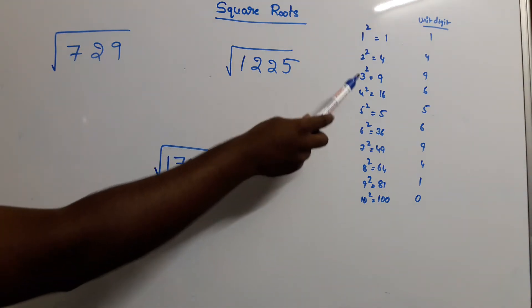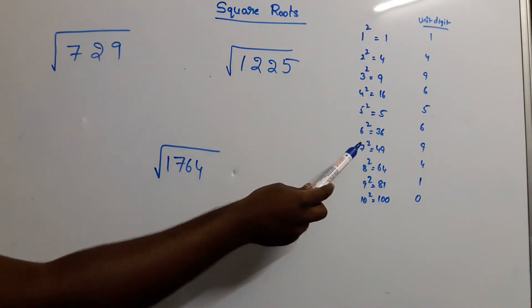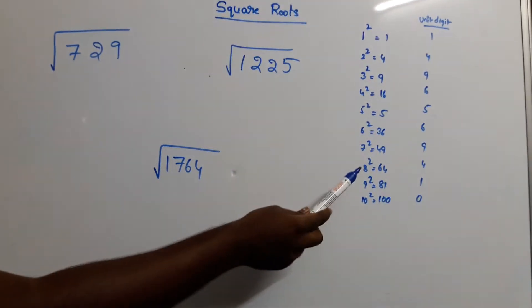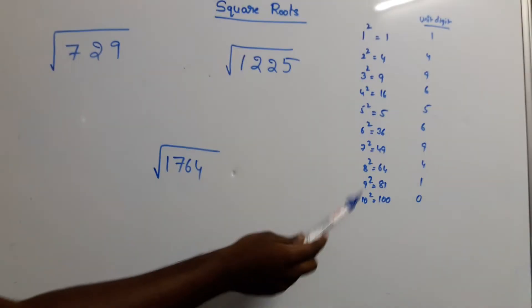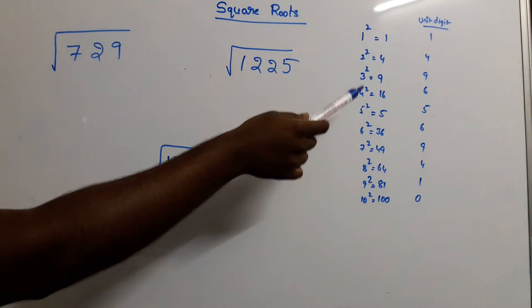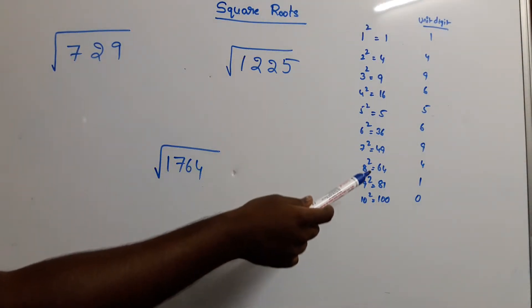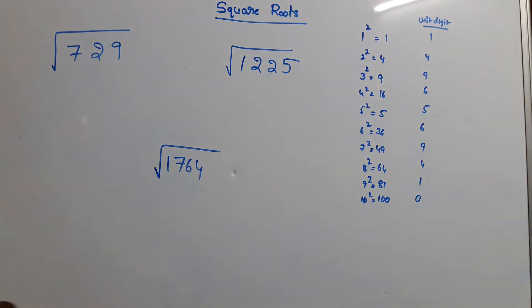1 square, 2 square, 3 square, 4 square, 5 square, 6 square, 7 square, 8 square, 9 square, 10 square. The unit digits are 1, 4, 9, 6, 5, 6, 9, 4, 1, 0.